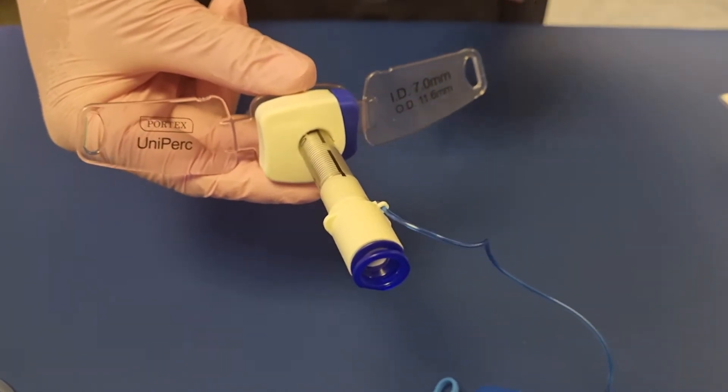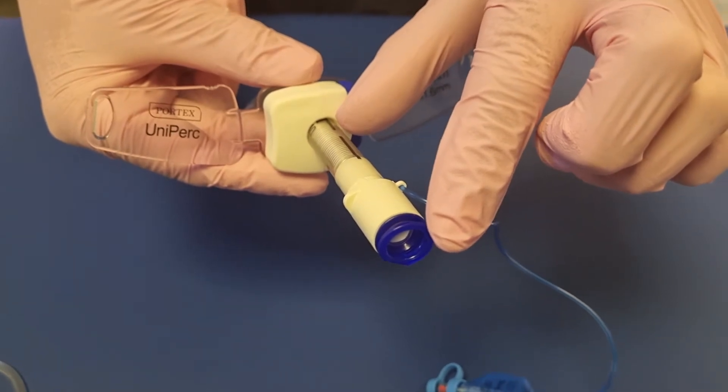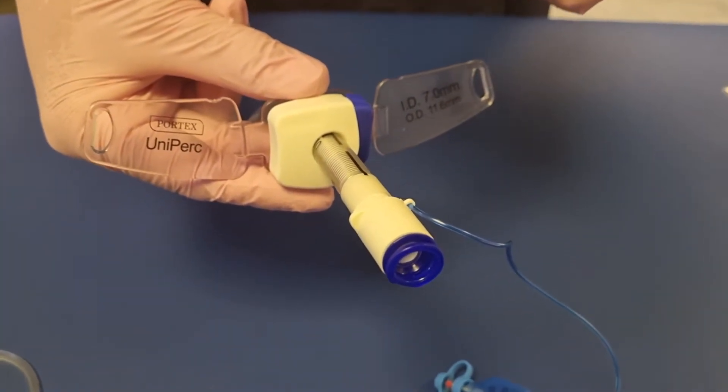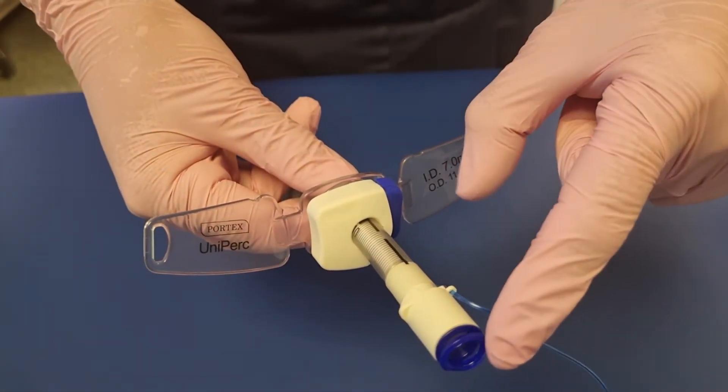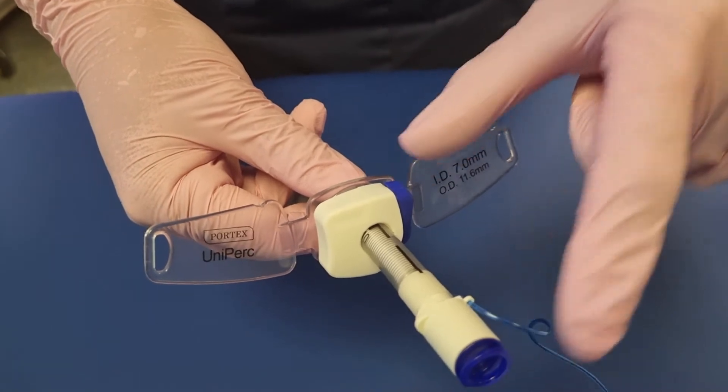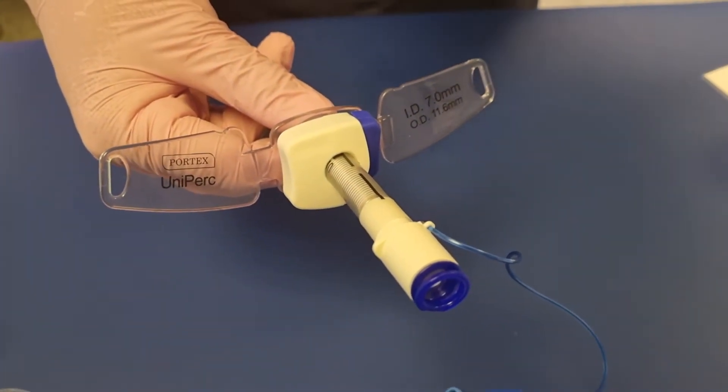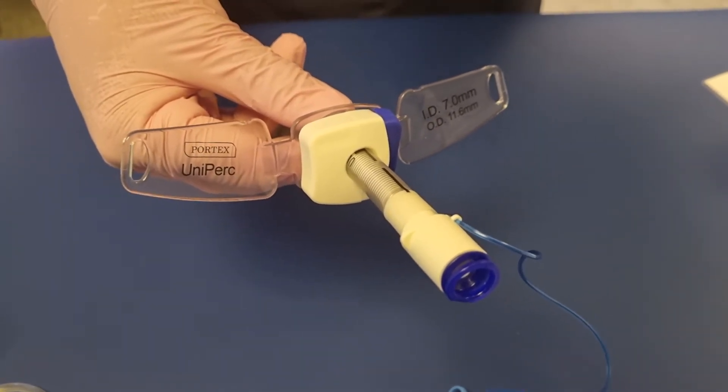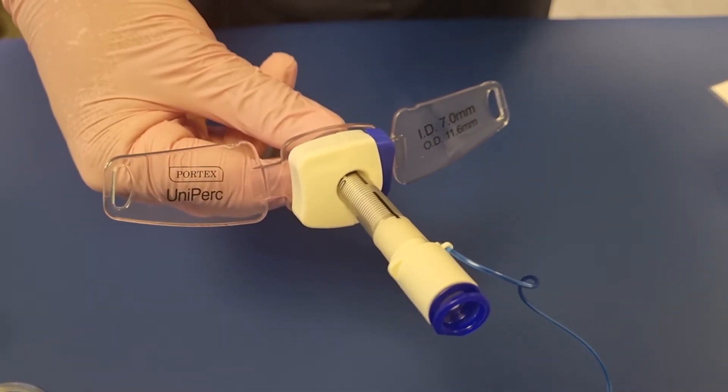The ENT surgeons should always measure the distance between the end of the tracheostomy tube and the securing part. So the surgeon should measure from the end of the tube to the securing clip, and that point is always put in our records to ensure that the adjustable flange tube is kept in the correct position whilst it's in the patient.